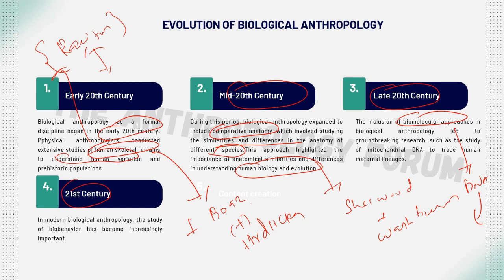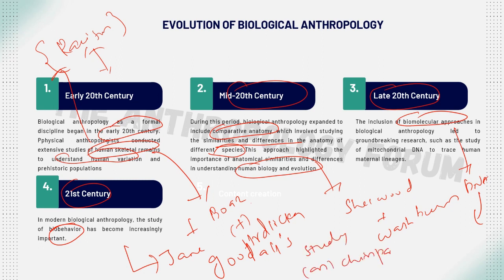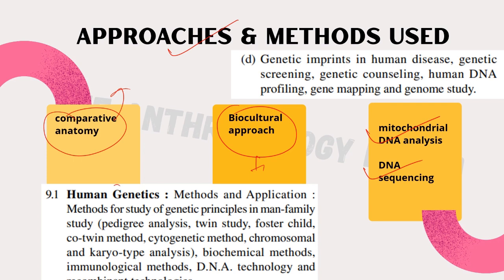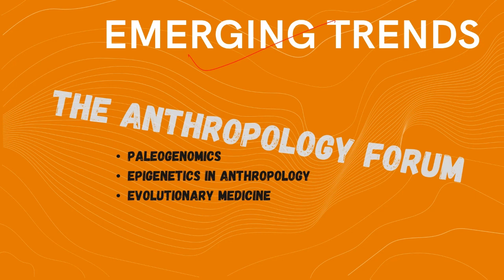In contemporary times, during the 21st century, biological anthropologists are also interested in studying bio-behavior — for example, Jane Goodall's study on chimpanzees to understand the behavioral aspects of primate social systems, which helps us understand human behavior. Approaches and methods used in biological anthropology include comparative anatomy, the biocultural approach, and many genetic and biological techniques such as mitochondrial DNA analysis and DNA sequencing — all of which we will study under chapter 9.1 on human genetics, including DNA technology, DNA profiling, and gene mapping.